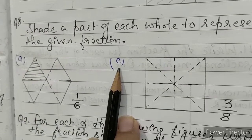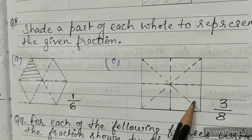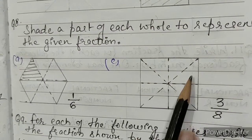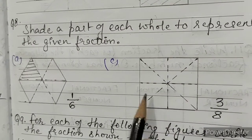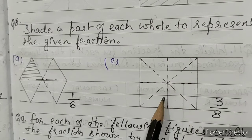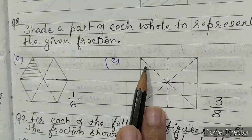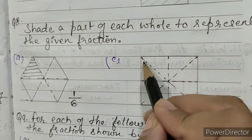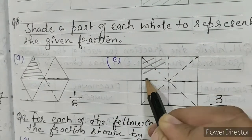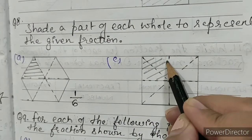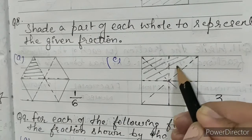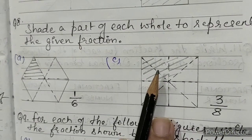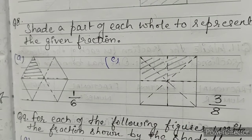C: this figure is divided into 8 equal parts — 1, 2, 3, 4, 5, 6, 7, 8. We have to shade any 3 parts out of 8. We will shade these 2 parts and this one. This shaded part is 3 eighths of the figure.